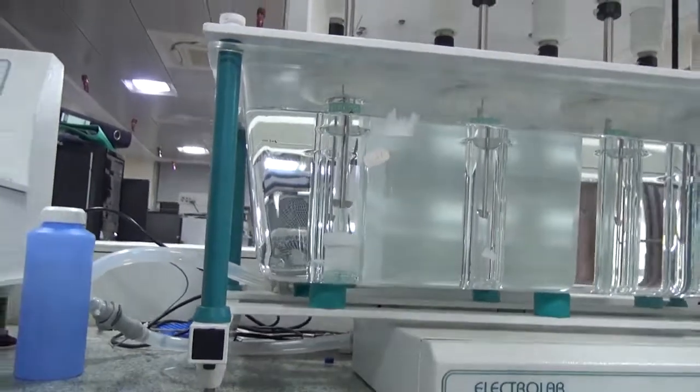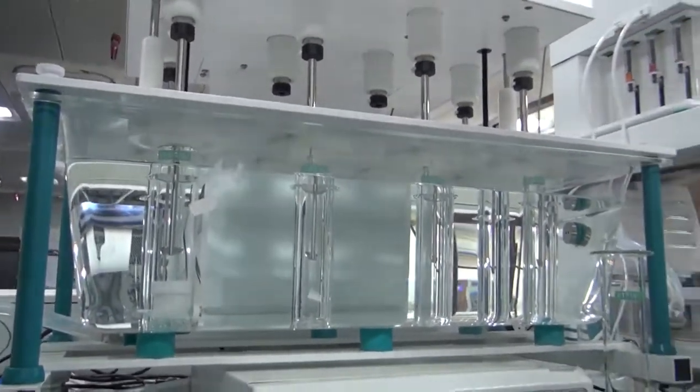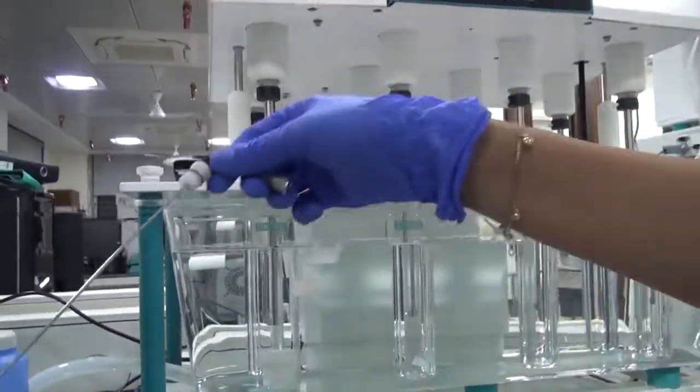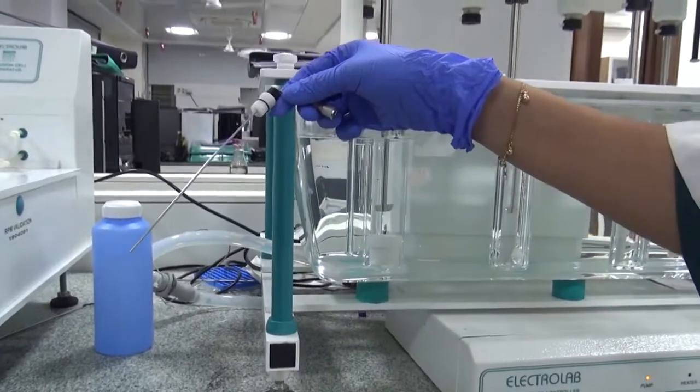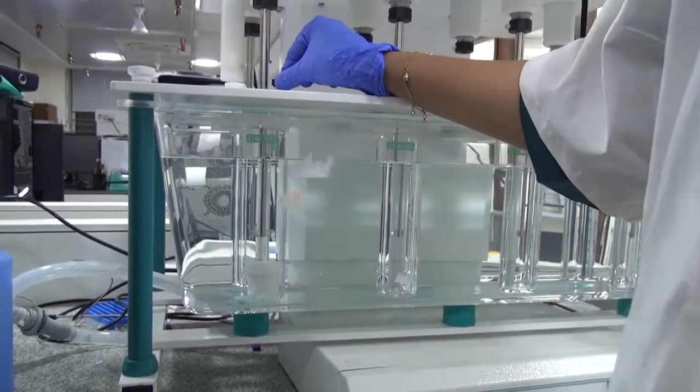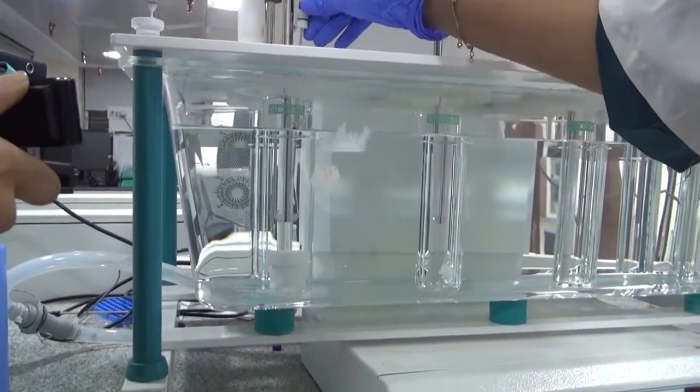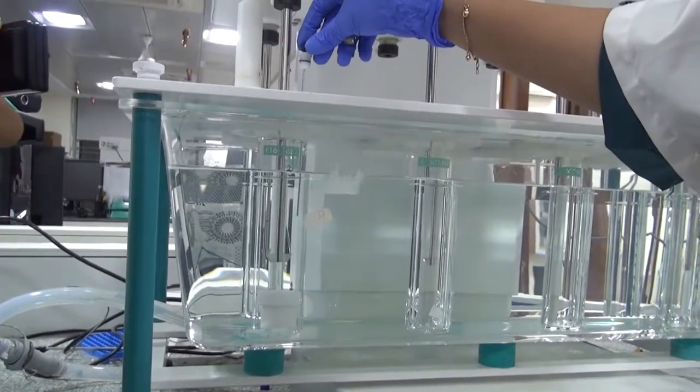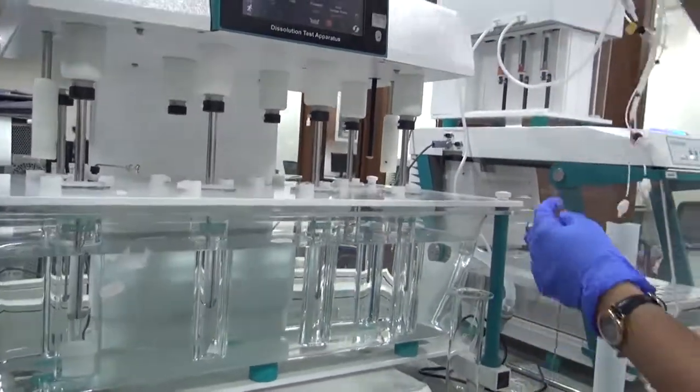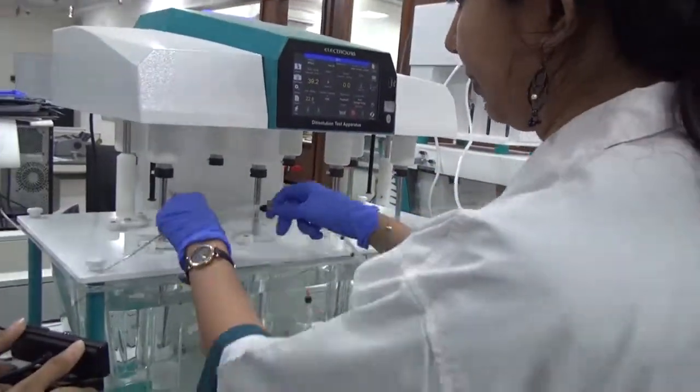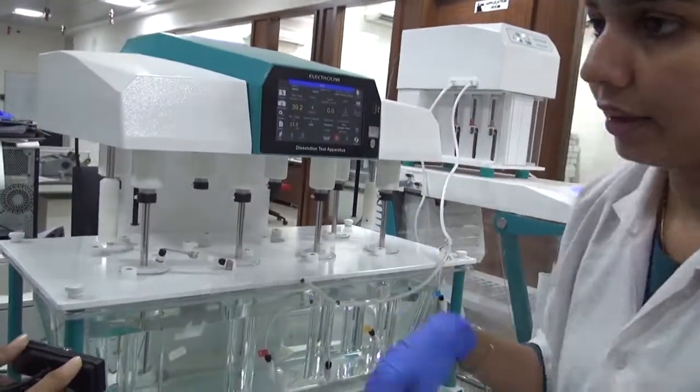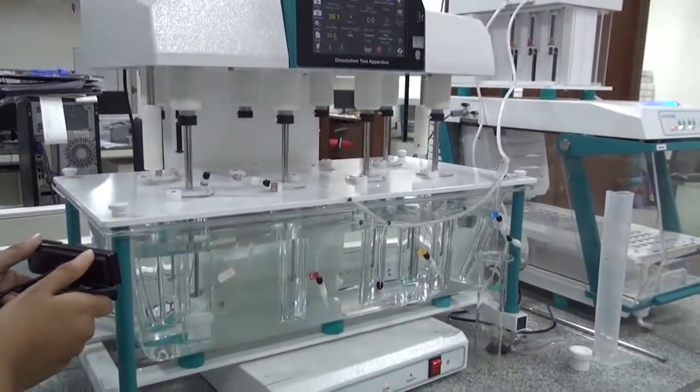This is the cannula that we have for sampling from the immersion cell vessel. This cannula will go in and rest at the sampling zone. The height can be adjusted for this cannula, and it can be connected to the syringe pump and sample collector, which ensures we get automatic sampling.